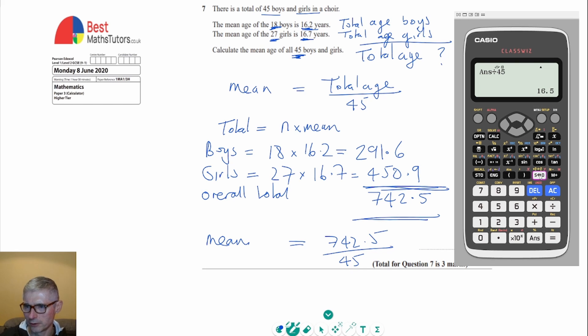33 over 2, which is 16.5. And 16.5 is a sensible value because it's between the ages given, or the mean ages given for the boys and the girls.